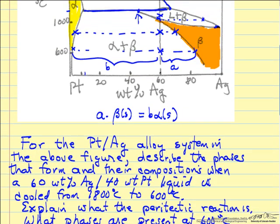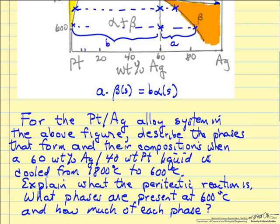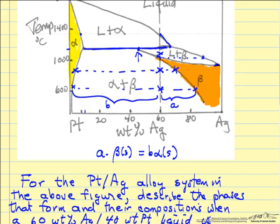So at this final point we are closer to beta, giving us a majority of beta — 73% — and 27% alpha phase. That is where we have stopped cooling this example. This whole region represents these two solid phases in equilibrium.